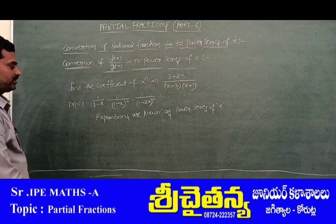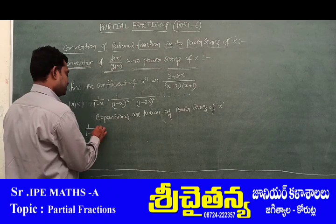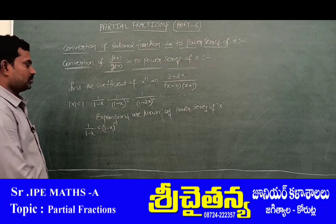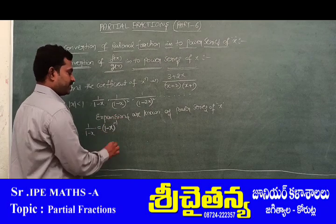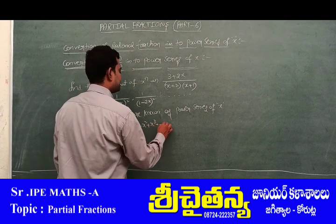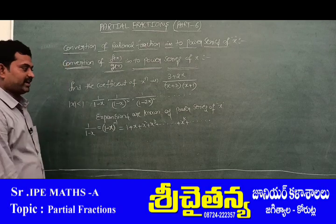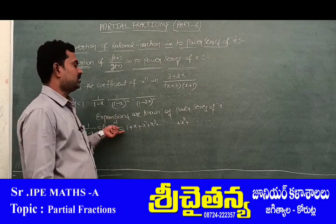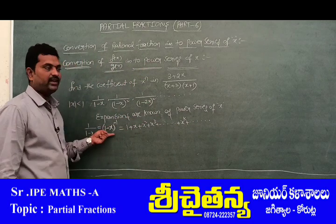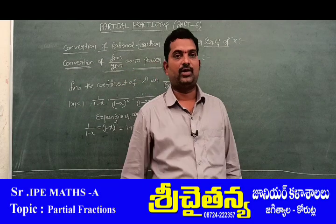First, we have to know the formula: 1/(1-x) can be written as (1-x)^(-1), which equals 1 + x + x² + x³ + and so on. The proof of this formula will be discussed in the binomial theorem chapter. Briefly, (1-x)^(-1) = 1 + x + x² + x³ + ...